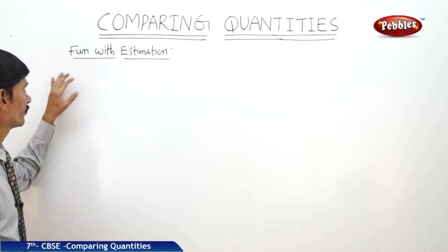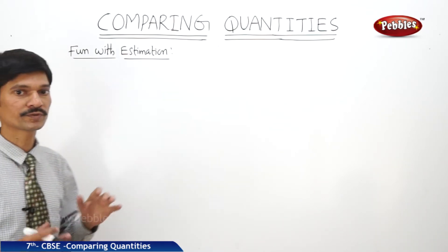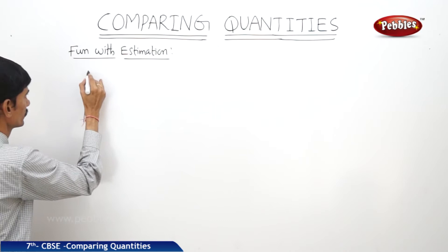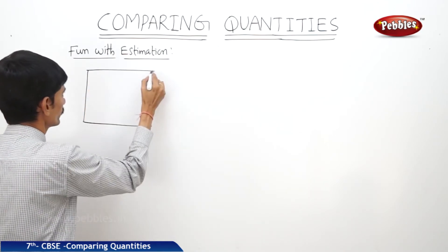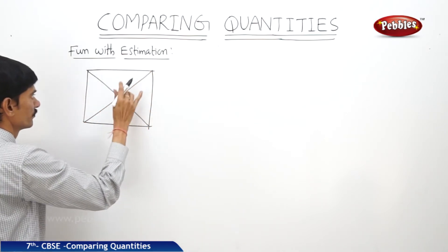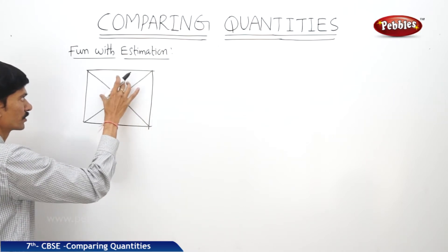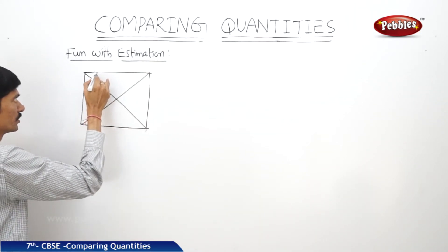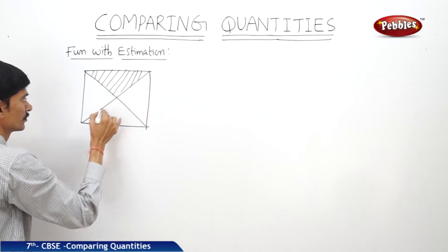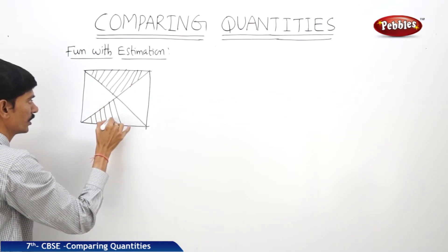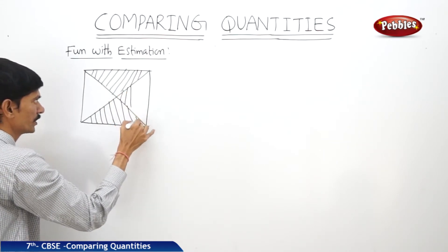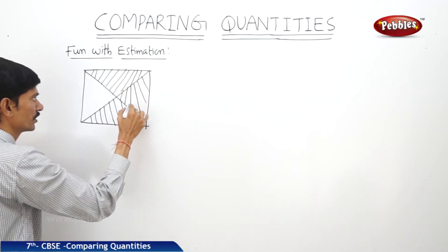Let us see the next topic: fun with estimation. Percentage helps us to estimate the percentage of an area. For example, there is a square divided into four equal triangles — four triangles of equal area. Out of these four equal triangles, three triangles are shaded. How much part of the square has been shaded?